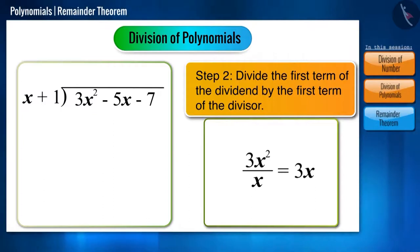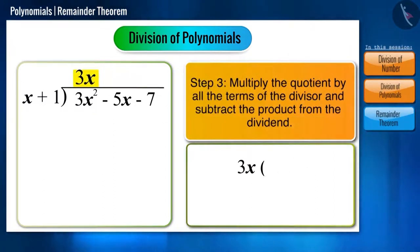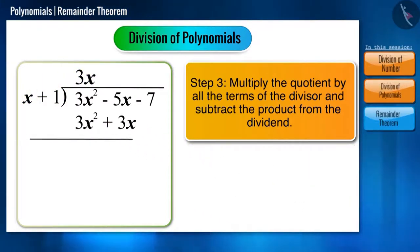Place 3x in the quotient and multiply 3x by all the terms of the divisor. We get plus 3x squared plus 3x, which we will write here and subtract just like we do with numbers.